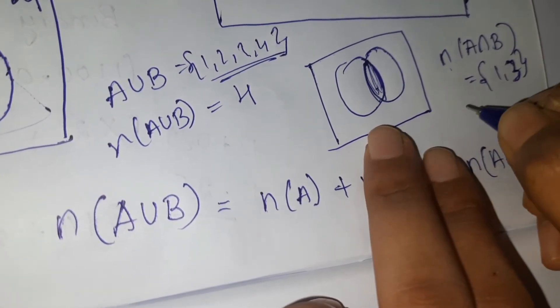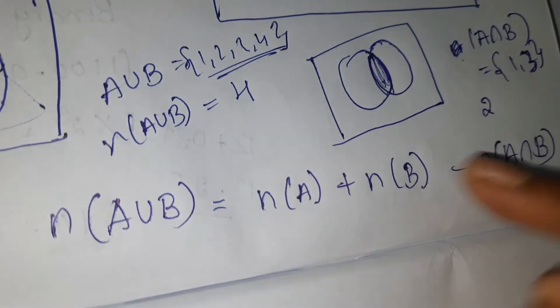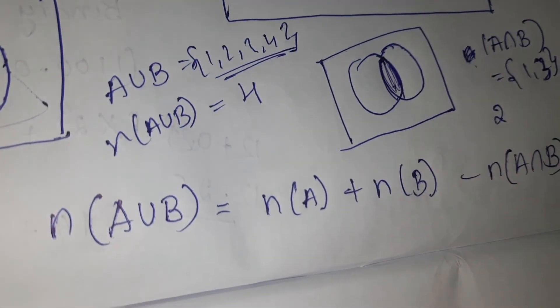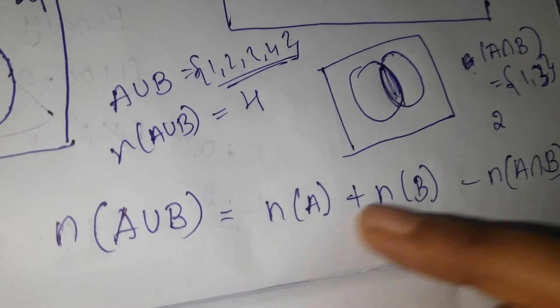n means number of elements. So suppose in a question they gave number of elements in A and number of elements in B. You can find the intersection of those, and after finding the intersection...